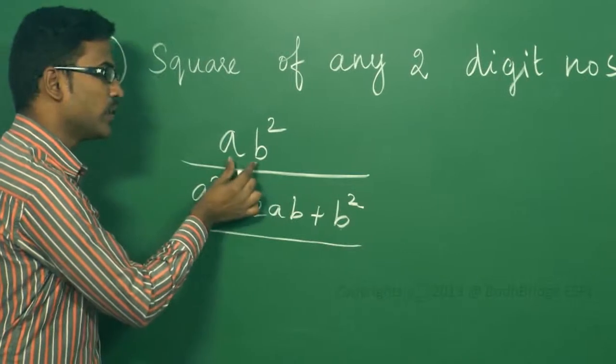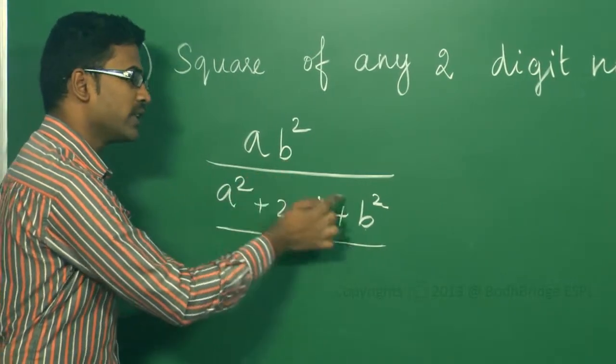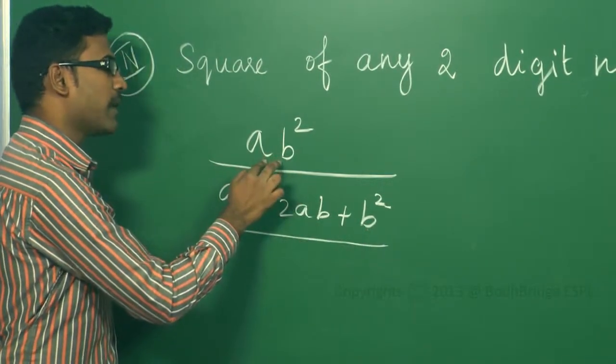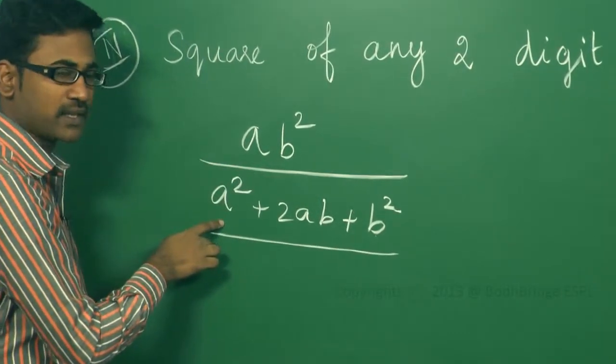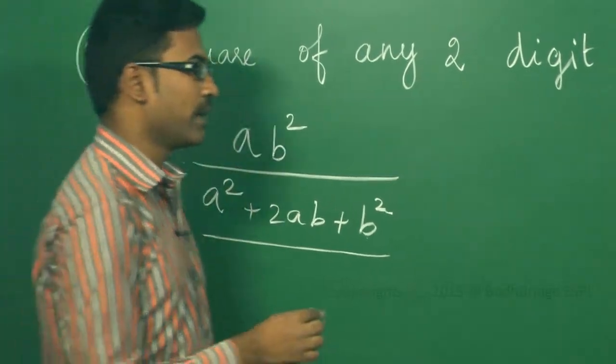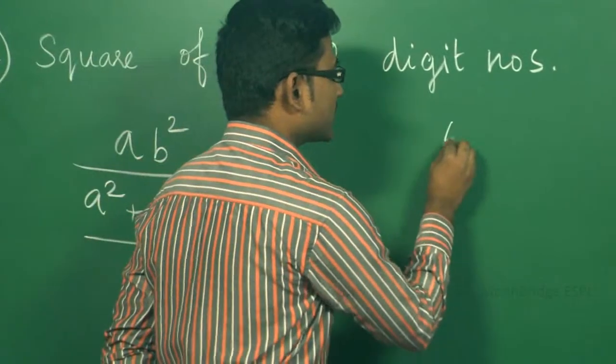If this is a two-digit number, the first step is to square the unit digit. Second step: multiply the two digits and double. Third step: square the other digit which is present. Now, we will take an example like 67 squared.